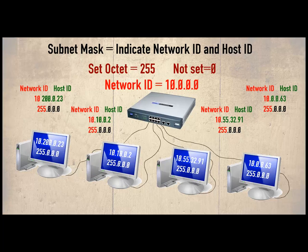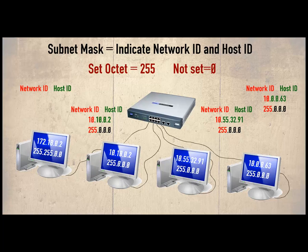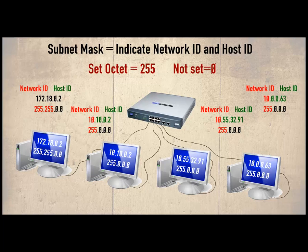In our last example, the host on the left has its IP address changed to a Class B address: 172.18.0.2. The subnet mask is now 255.255.0.0, meaning the first two octets are set and the network ID for this host has changed to 172.18. With this change, it will be unable to communicate with the hosts on network ID 10.0.0.0.